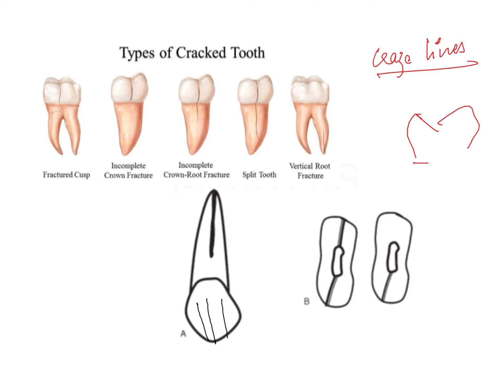In a fractured cusp, for the maxillary teeth the central groove runs in the mesiodistal plane, with four or five cusps having buttressing forces directed toward the central groove. For the mandibular teeth, the central groove represents the point of least resistance, so the fracture occurs along the buccolingual direction, splitting the tooth into a buccal fragment and a lingual fragment.